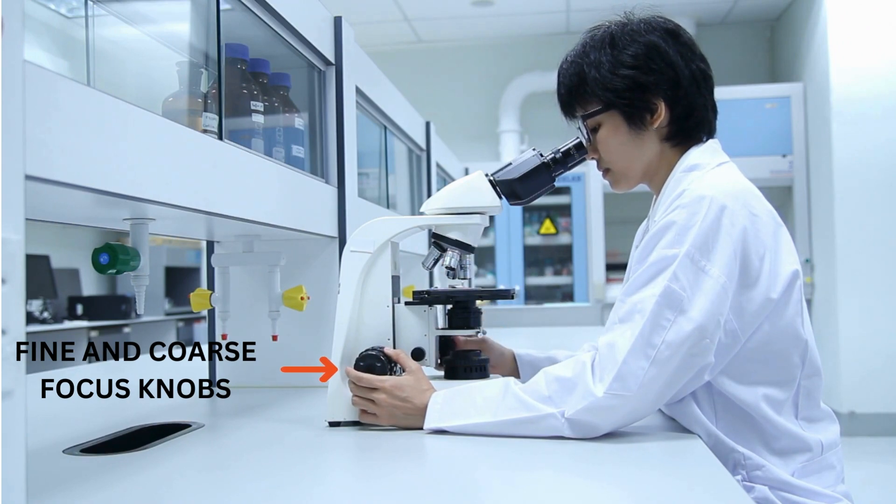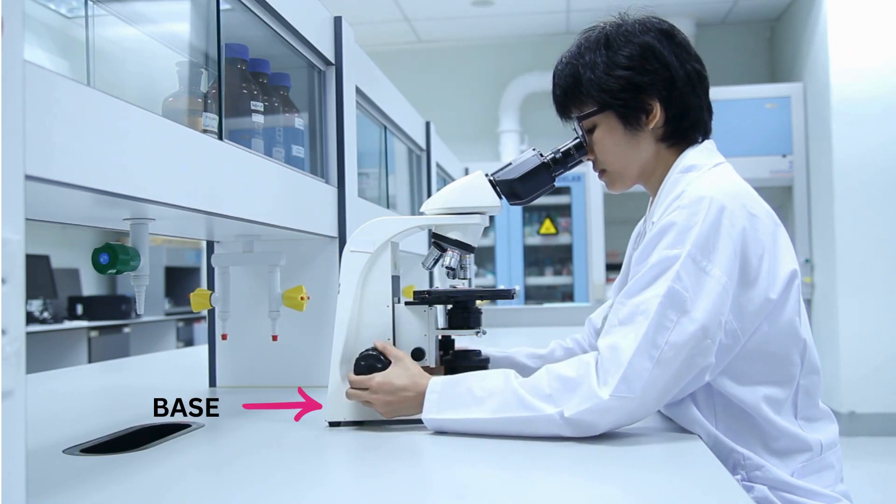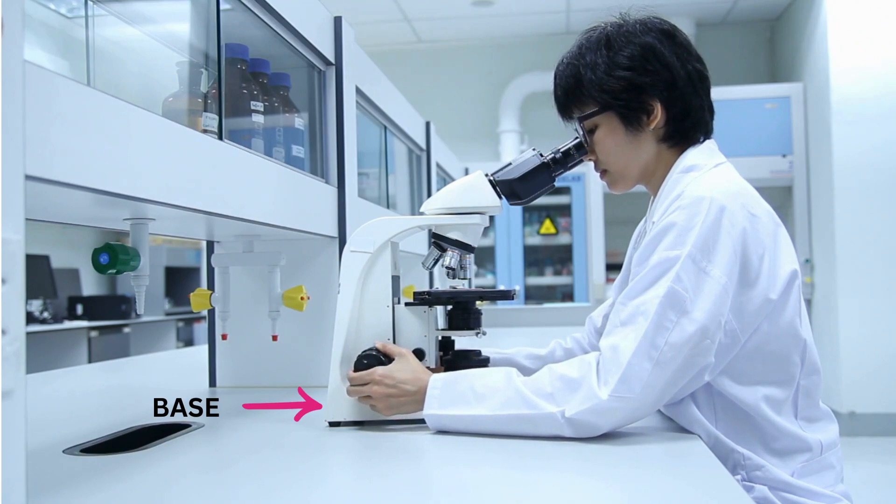Arm. The arm is the vertical support that connects the base to the head of the microscope. Base. The base is the bottom part of the microscope that provides stability and support.